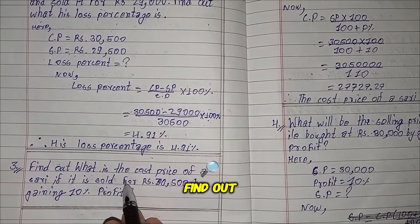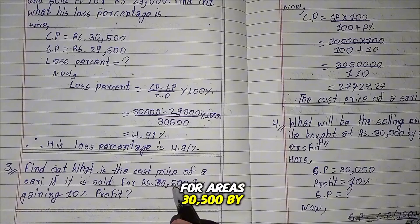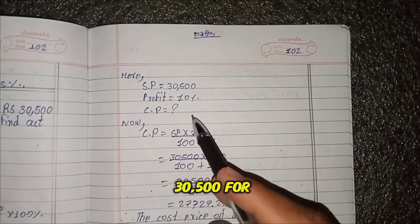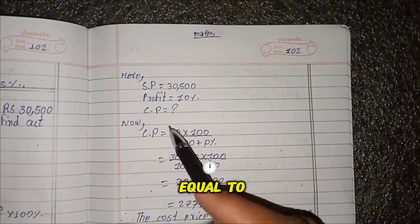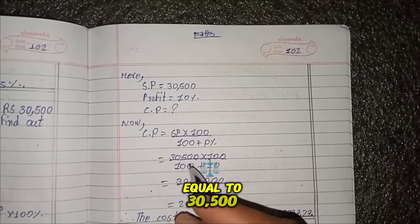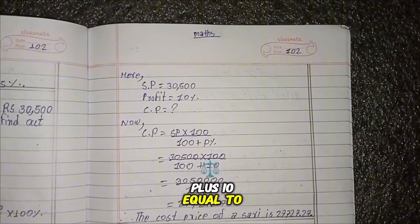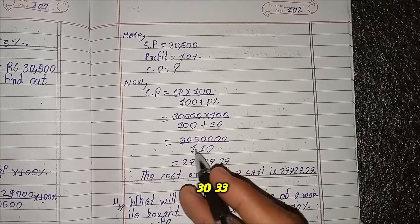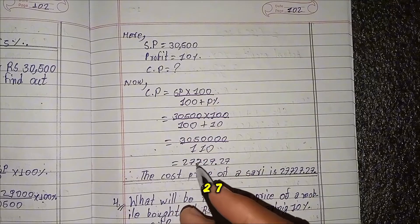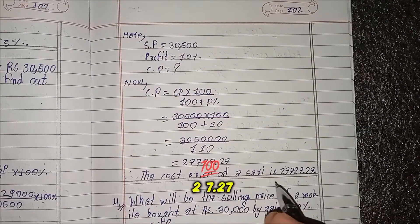Question 3: Find the cost price of a shari if it is sold for RS 30,500 by gaining 10 percent profit. Here, SP equals 30,500, profit equals 10 percent. CP equals SP multiplied by 100 divided by (100 plus profit percent) equals 30,500 multiplied by 100 divided by 110 equals RS 2,727.27. Therefore, the cost price of the shari is RS 2,727.27.